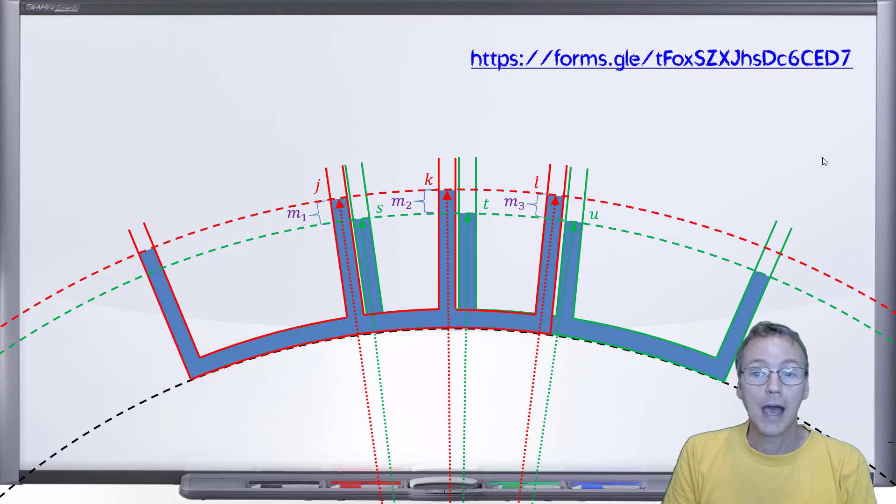What does hypothesis number two predict if we set it up this way and we do these three measurements? What are we expecting to find?